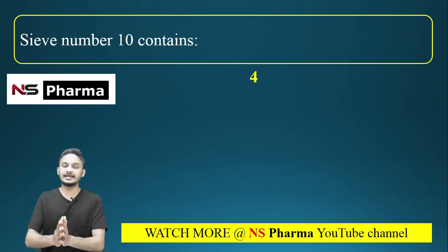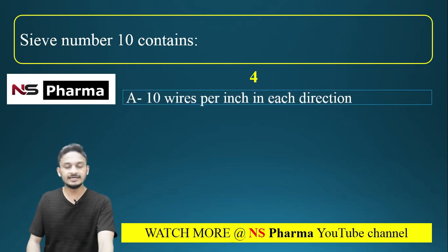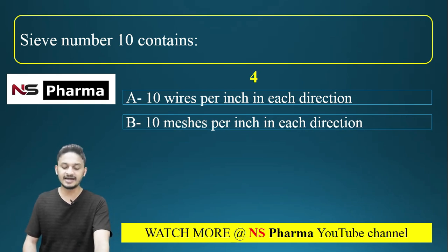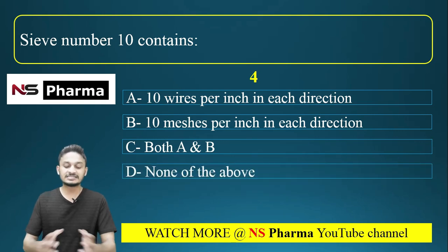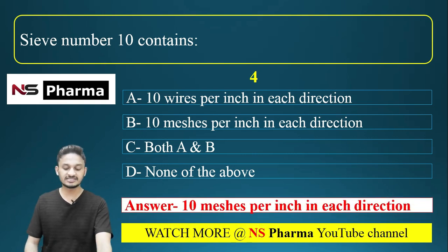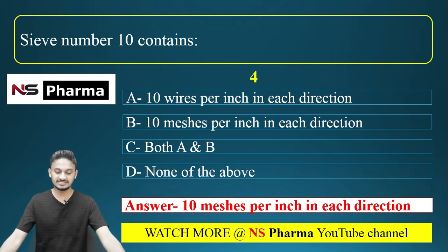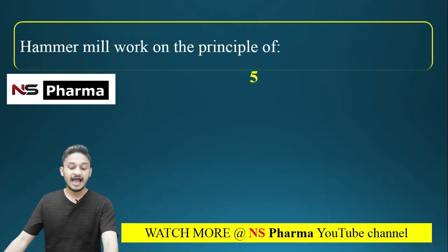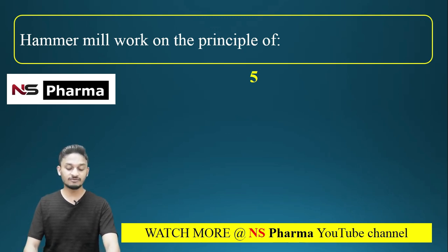Question 4: Sieve number 10 contains — options: (a) 10 wires per inch in each direction, (b) 10 meshes per inch in each direction, (c) both A and B, (d) none of the above. The correct answer is option B: 10 meshes per inch in each direction.